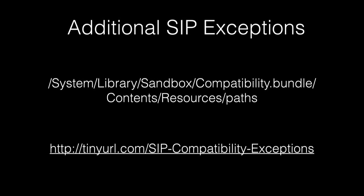In addition to the SIP exceptions defined in rootless.conf, there is a second list of SIP exceptions that includes a number of directories and application names for third-party products. Like rootless.conf, this exclusion list is Apple's, and any third-party changes to it will be overwritten by Apple. If you want to see the current list, it's available via the link shown on the screen.